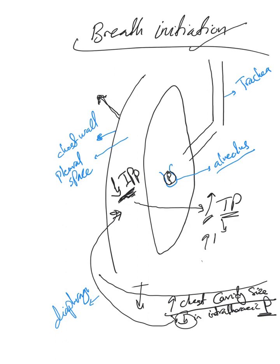Because of the increase in transpulmonary pressure, this will lead to an increase in lung size or volume — the lung will inflate and become bigger. Note that there is still no airflow at this point. When the lung becomes bigger, the alveolus becomes bigger too; with a constant amount of air, applying Boyle's Law, this leads to a decrease in alveolar pressure.